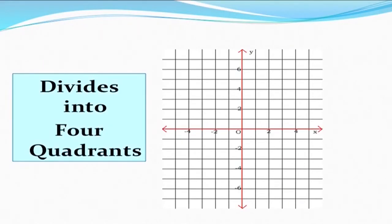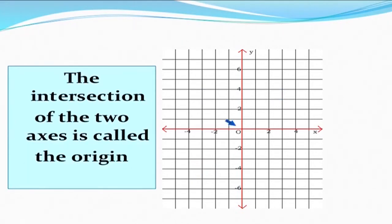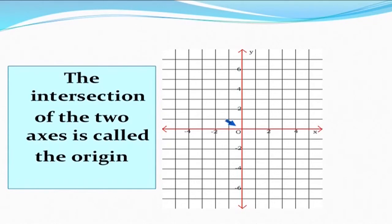This system divides a plane into four quadrants: the first quadrant, second quadrant, third quadrant, and fourth quadrant. The intersection of the two axes is called the origin. To the right of the origin we have positive numbers, as on a number line — right of zero is positive and left of zero is negative. For the vertical axis, above the origin we have positive numbers and below the origin we have negative numbers.